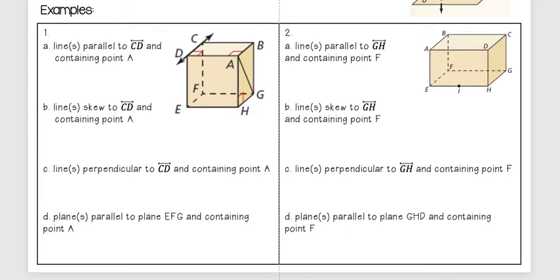I want to find a line that's parallel to it containing point A. So I know from my definition that parallel means that they're coplanar, so they're on the same plane and they don't intersect, and it wants me to find one that has point A.